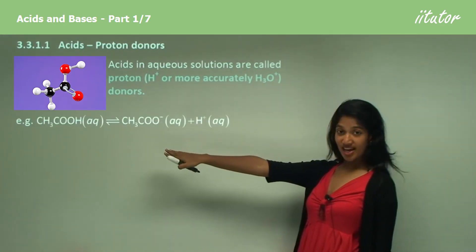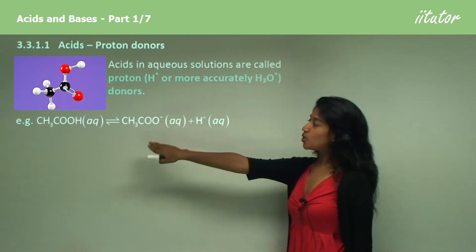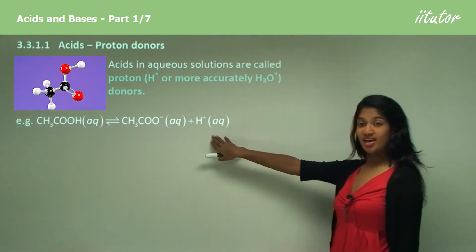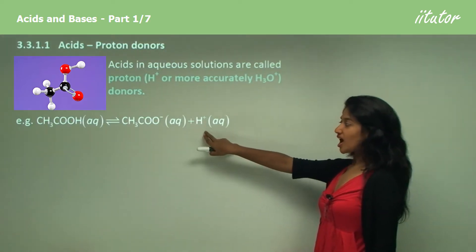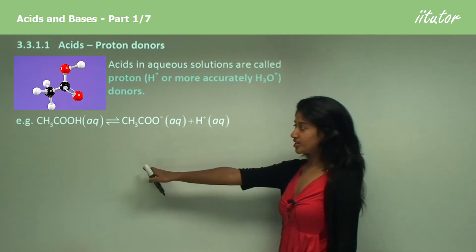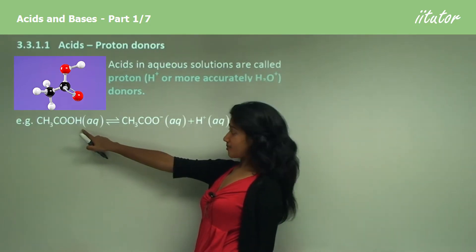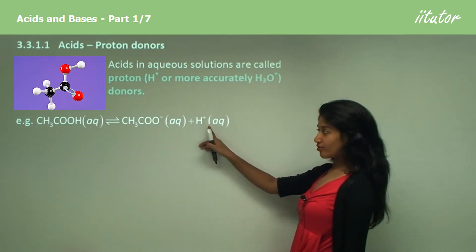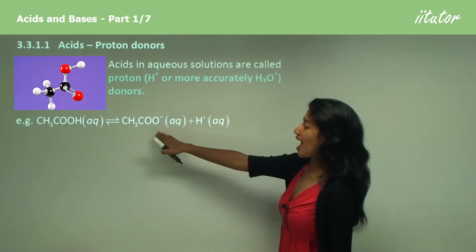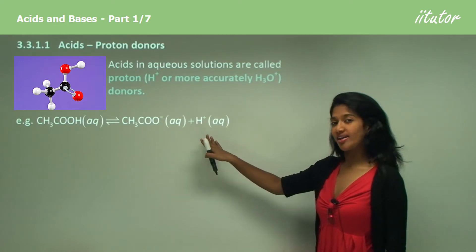We have acetic acid which ionizes to produce a hydrogen ion and an acetate anion. You can see that the hydrogen ion is part of the hydrogen here. The hydrogen disintegrates and moves away from the acetate anion and they separate. This is called ionization.